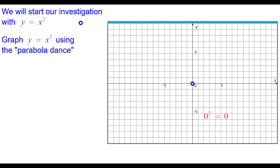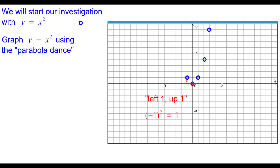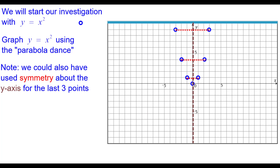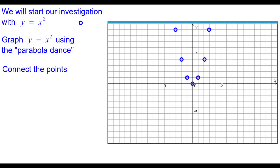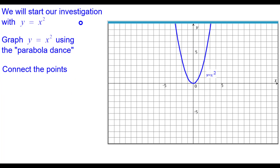We start at the origin (0, 0) because 0 squared equals 0. Right 1 up 1 because 1 squared is 1. Right 2 up 4. Right 3 up 9. And on the other side: left 1 up 1, left 2 up 4, left 3 up 9. We could also use symmetry about the y-axis. Connect the points and you have y equals x squared — that beautiful parabola.